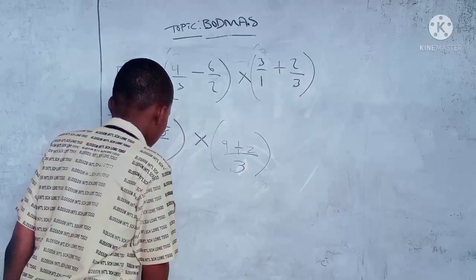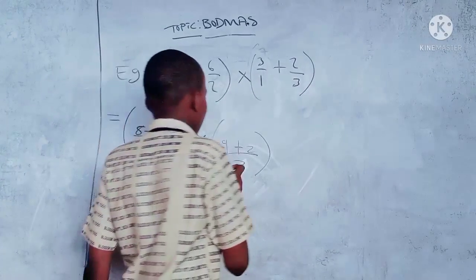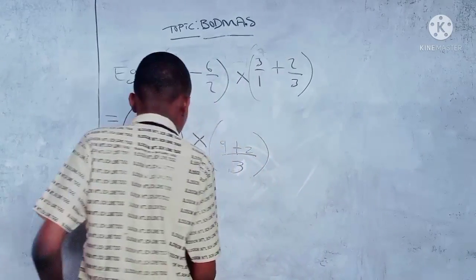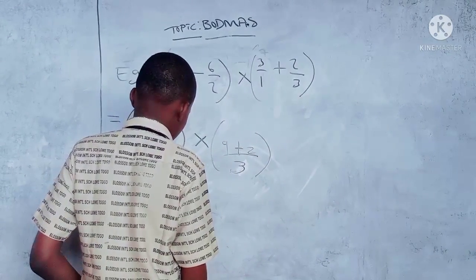Times nine plus two equals eleven, eleven over three.